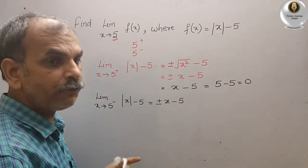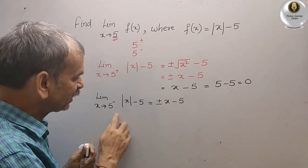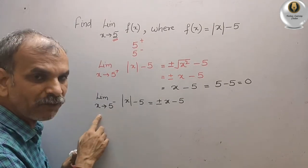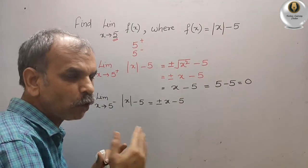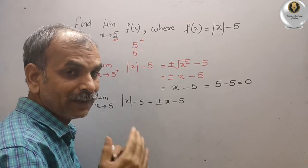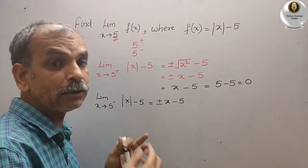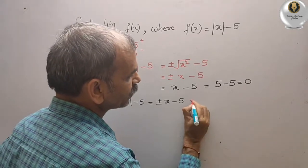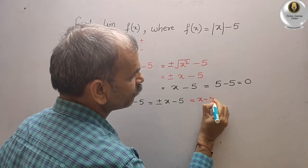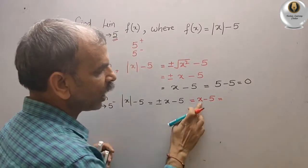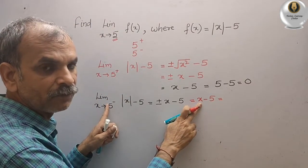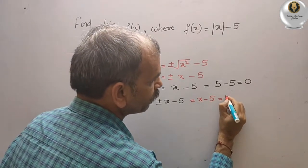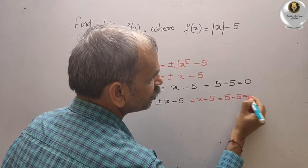Now if you go towards the negative side of the 5, again that means 4, towards the 4, then also x is positive only. So what we will write? We will simply write it as x minus 5. That is equal to, now replace this value by 5. We will get 5 minus 5, that is equal to 0.